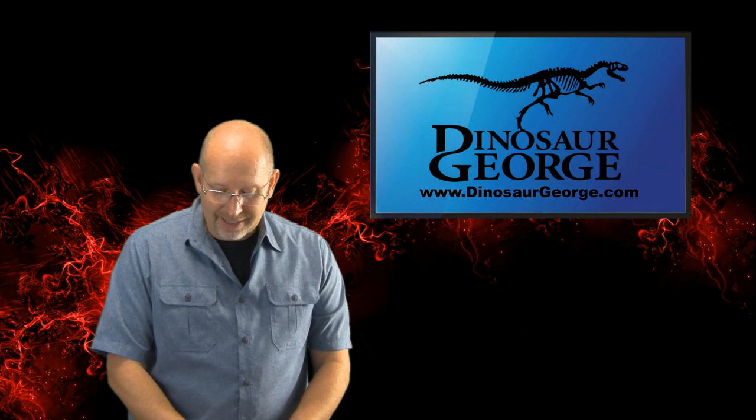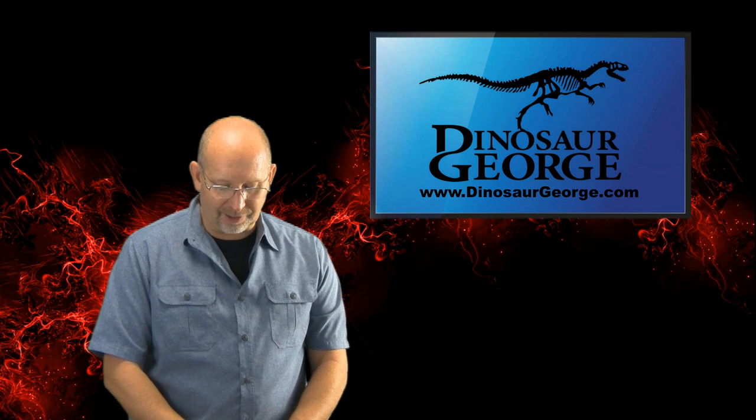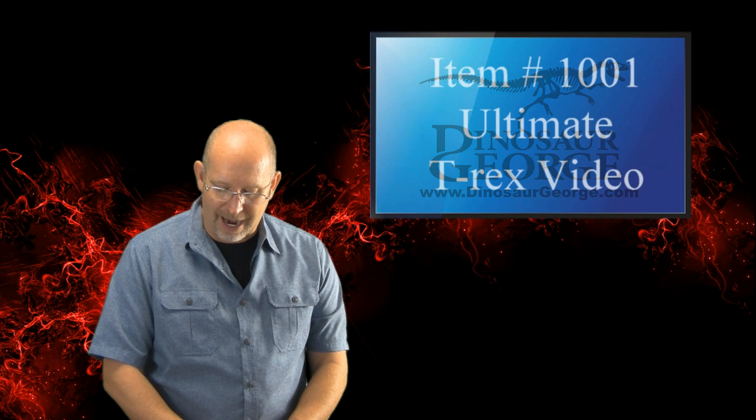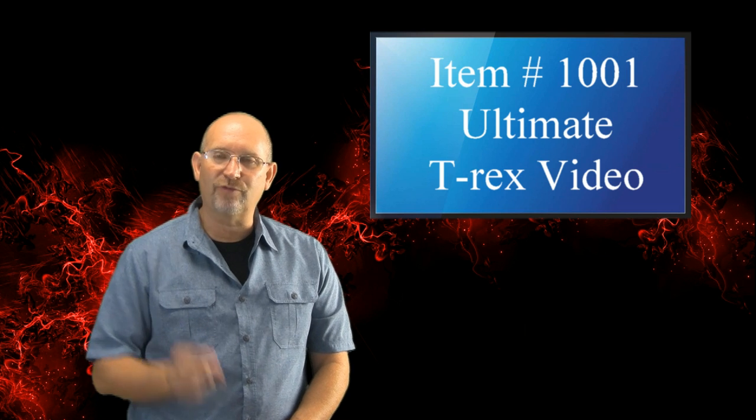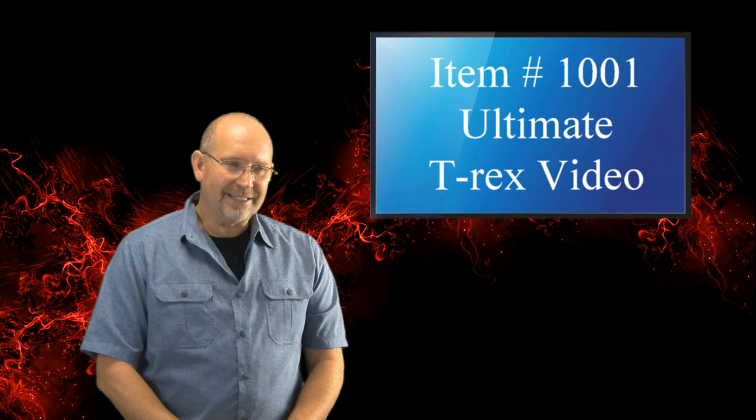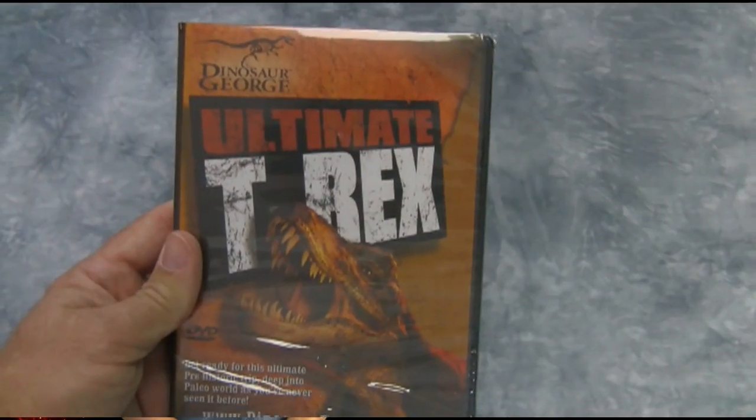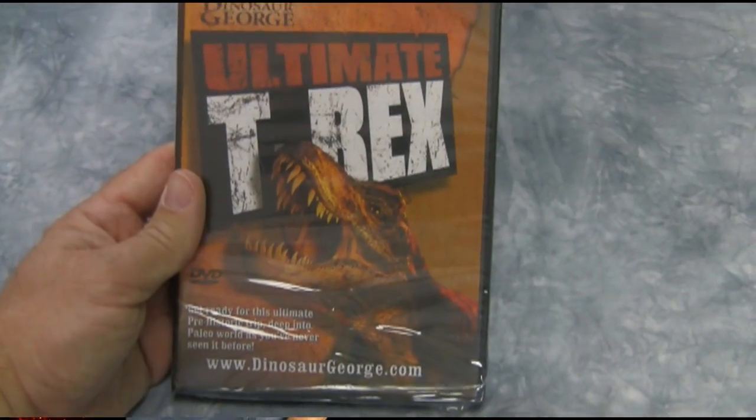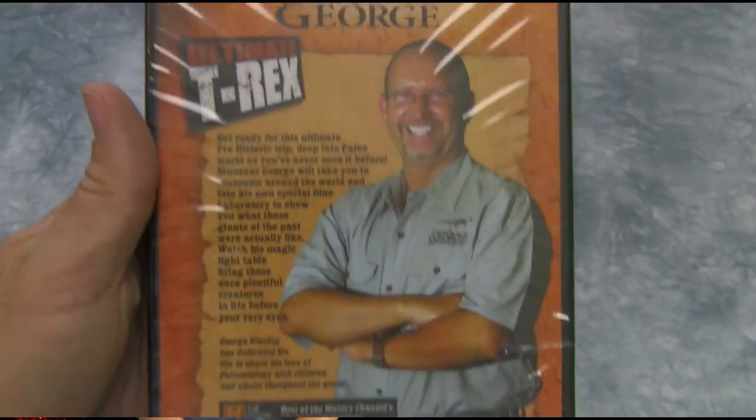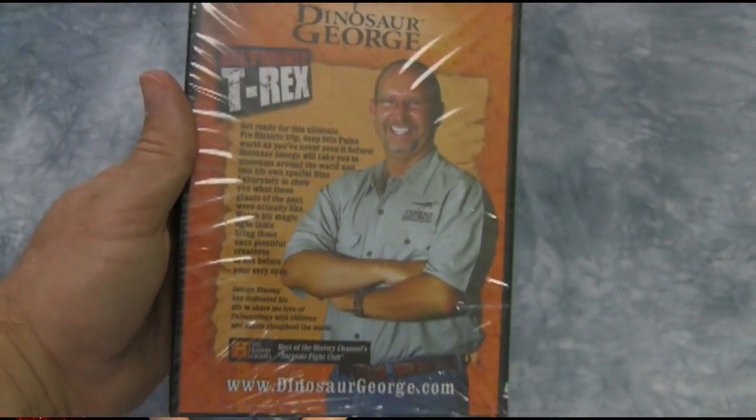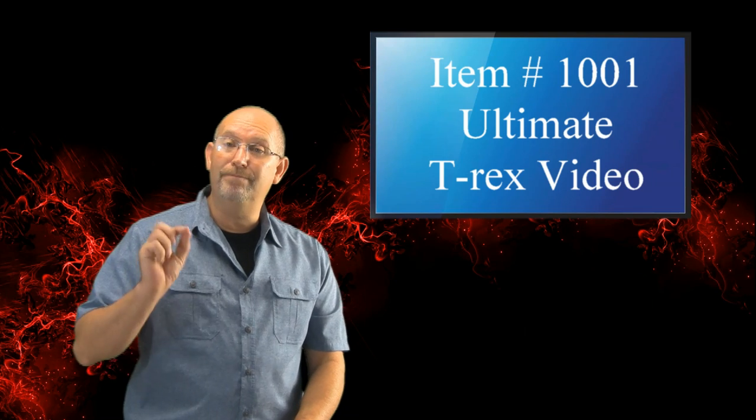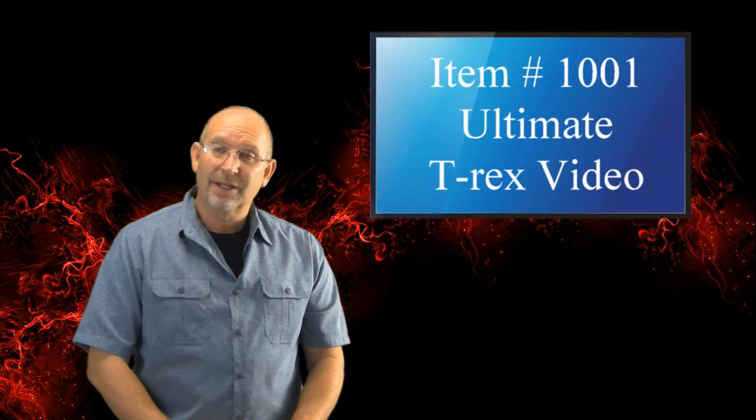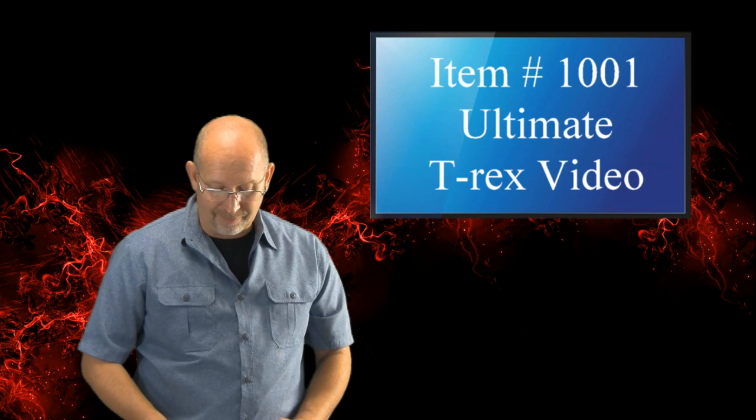The highlighted item for this particular episode is my Ultimate T-Rex video. It's item 1001, retails for $8. It's about a 35 to 40 minute DVD that talks about everything you want to know about Tyrannosaurus Rex. It was a lot of fun making. I also have a couple of other videos on my website, so you'll see a link that'll take you to our catalog.